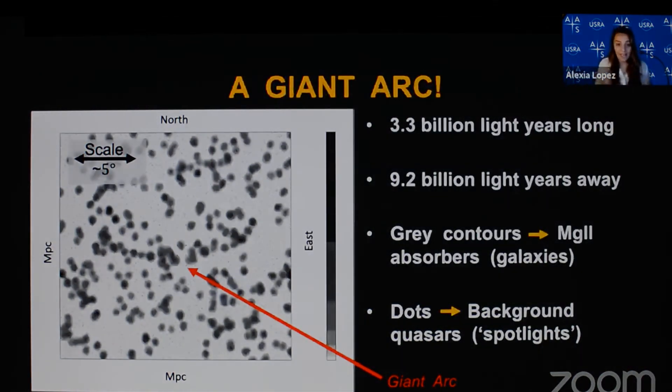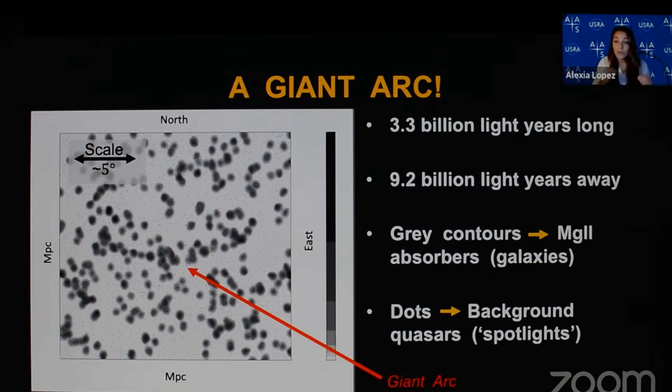Here I present a giant arc of magnesium-2 absorbers corresponding to a large-scale structure of galaxies. The grey contours, or splodges, represent the magnesium-2, and the dots represent the background quasars. The giant arc spans 3.3 billion light-years, which is almost three times the theoretical threshold. In fact, if you had 15 giant arcs, they would reach from here to the edge of the observable universe. The giant arc is 9.2 billion light-years away, which means we're seeing it when the universe was only half its present age.